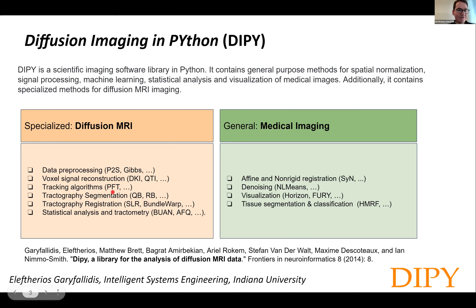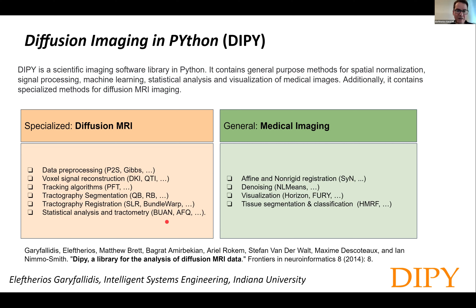There are tracking algorithms such as the particle filtering tracking algorithm, tractography segmentation methods such as QuickBundles and RecoBundles, and tractography registration such as streamline-based linear registration and BundleWarp, which is a new non-rigid registration method of bundles.